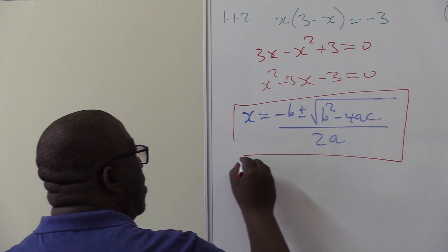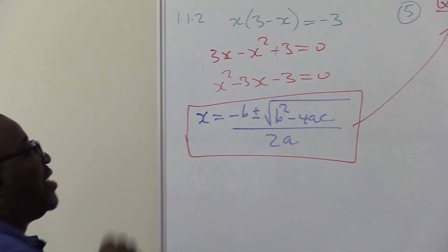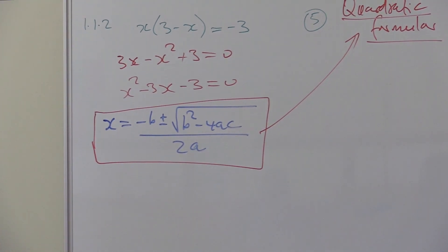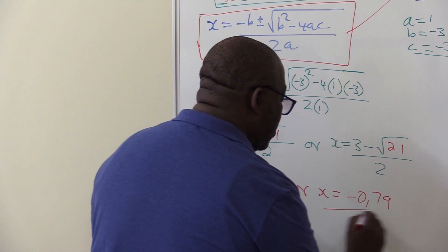This formula is called the quadratic formula. We use it to solve for x if you can't find factors, like in this particular case. Now, all that you need to do is to put this in your calculator. These are the two values of x.